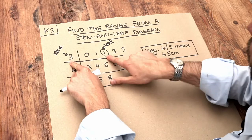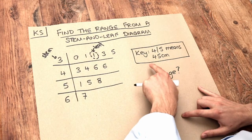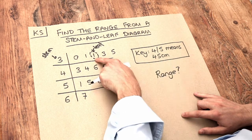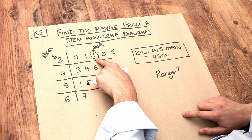So we've got three and one, and we use the key to decide what that means. So three one means 31 centimeters, so that value would represent 31 centimeters.